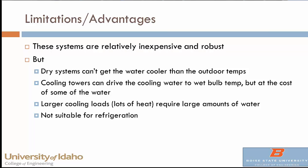If it's a dry system, you can't get the water any cooler than the outdoor temperature — in fact, you need a delta T to reject the heat. So if you're trying to cool below 80 or 90 degrees in warmer weather, you can't do it. With a cooling tower, you use the evaporative power of water, which can drive the temperature down to the wet bulb temperature — as much as 10 or 20 degrees cooler than outside, depending on how humid it is. But you lose water, and with large cooling loads, you're evaporating large amounts of water.